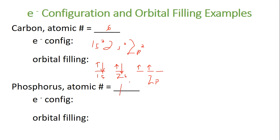Phosphorus is 15. The electron configuration going all the way up to 15 is 1S2, 2S2, 2P6, 3S2 — that's a total of 12. So I need three more, giving 3P3.